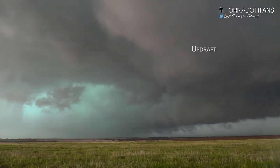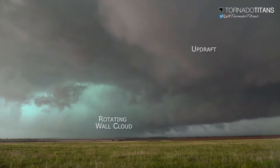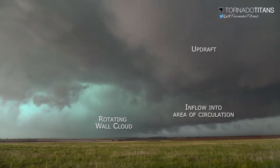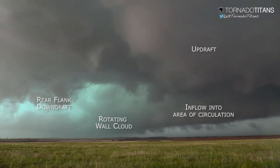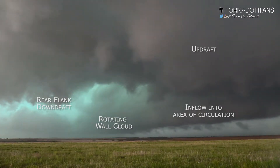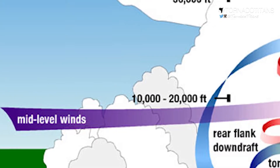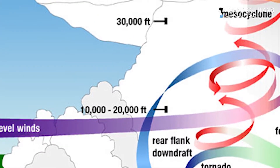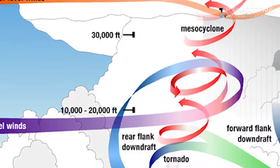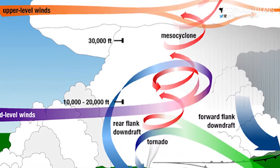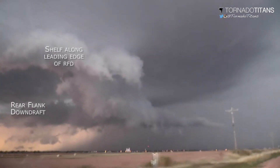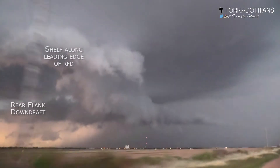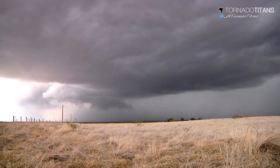The rear flank downdraft is a hugely important piece of a supercell storm's anatomy. The rear flank downdraft, or RFD for short, is a region of dry air wrapping around the back of a mesocyclone in a supercell. This air originates from the mid-levels of a storm as mid-level jet stream winds interact and wrap around a mesocyclone, and is then forced downwards by the storm in the rear portion of the cell.